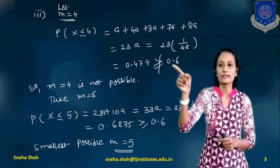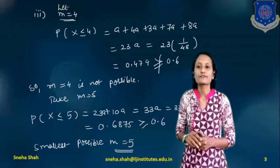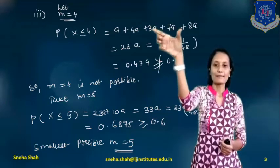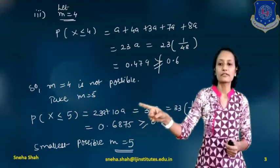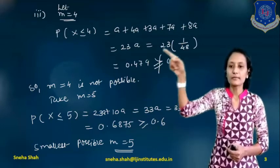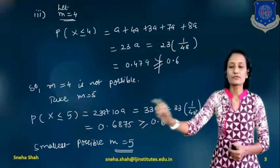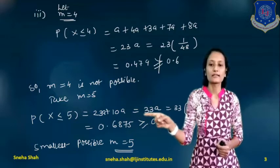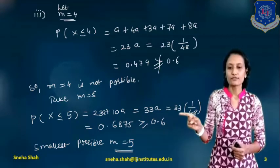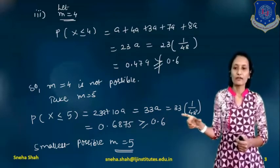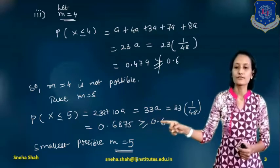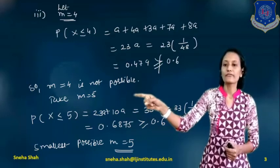Since n = 4 does not satisfy the condition, we try n = 5. P(x ≤ 5) = 23a + P(x=5) = 23a + 10a = 33a = 33/48 = 0.6875, which is greater than or equal to 0.6. So the condition is satisfied, and the smallest value of n is 5.